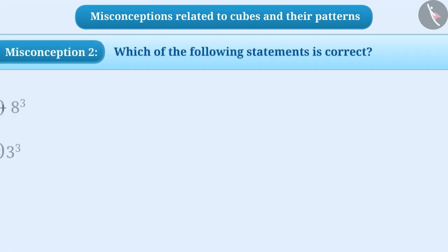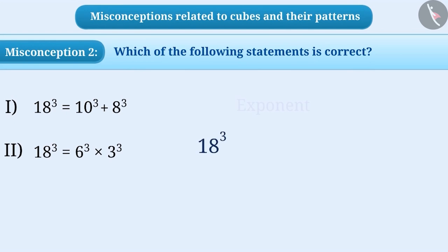Misconception 2. Which of the following statements is correct? Some children are unable to understand the exact meaning of exponents due to which they make small mistakes in the context of the cube. Some children begin to believe that 18 to the power of 3 is equal to the sum of 10 to the power of 3 and 8 to the power of 3 because the sum of 10 and 8 is 18. But this is a misunderstanding.